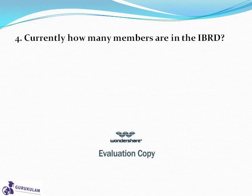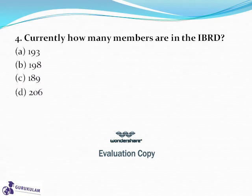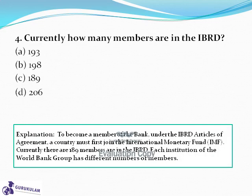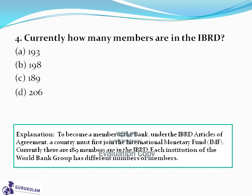Question 4: How many members are currently in IBRD? Options: 193, 198, 189, or 206. The answer is C, 189. UN has 193 members, IBRD has 189, and IDA has 173. To become a member of IBRD, a country must be part of the IMF.